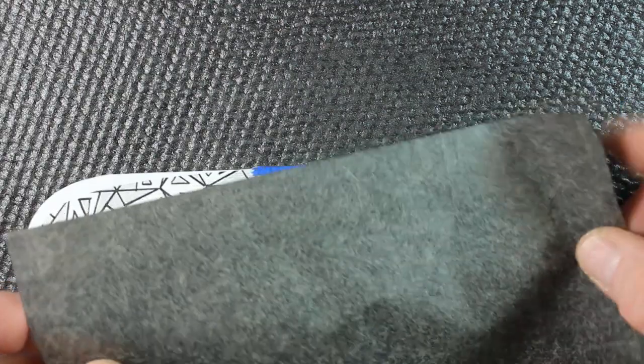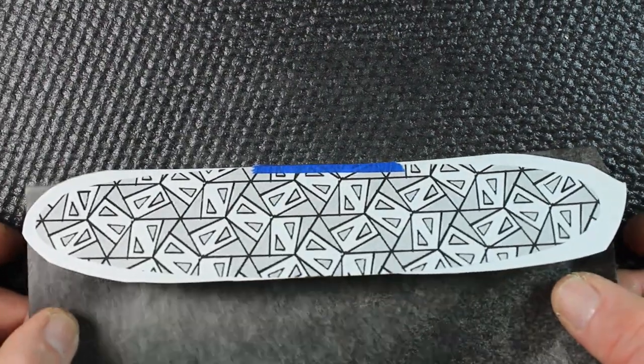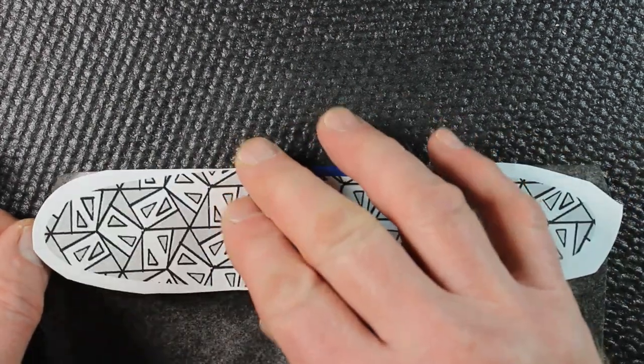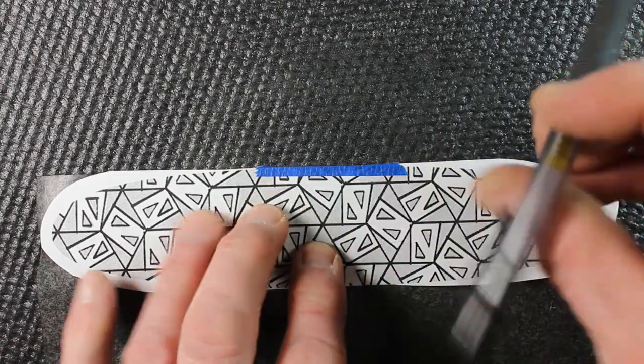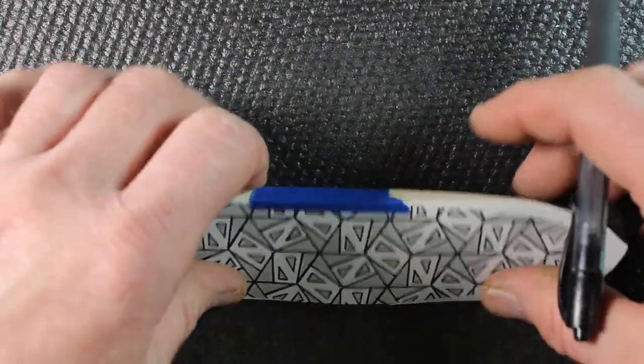Alright then I'm going to use a piece of graphite transfer paper. Okay this side down. Slide it underneath. And now it's a simple matter of just tracing over all the lines.